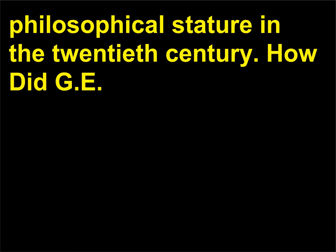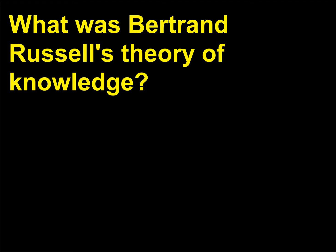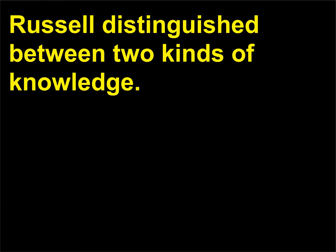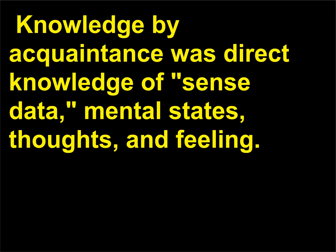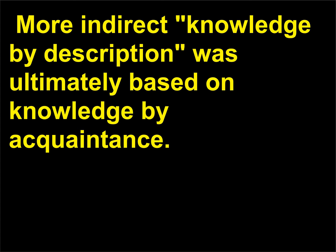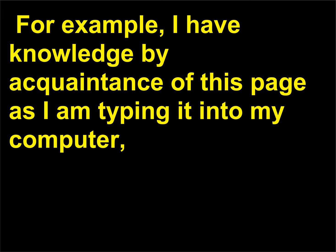What was Bertrand Russell's theory of knowledge? Russell distinguished between two kinds of knowledge. Knowledge by acquaintance was direct knowledge of sense data, mental states, thoughts, and feeling. More indirect knowledge by description was ultimately based on knowledge by acquaintance. For example, I have knowledge by acquaintance of this page as I am typing it into my computer, but knowledge by description of Burma, where I have never been.